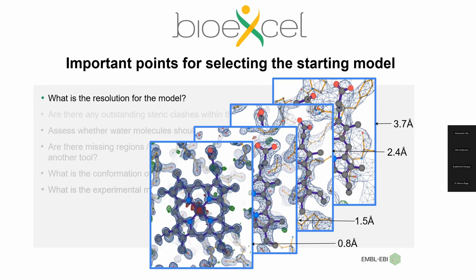One thing to bear in mind: if a structure has very high resolution, say 0.8 Å, it may also indicate the structure is very stable and not very flexible. That may mean an MD simulation may not lead to as much flexibility or movement as you may be expecting. You want to select a structure at a high resolution, but check if your active site or ligand binding site of interest is not extremely stable so there are no changes over the simulation. It depends on a case-by-case basis.